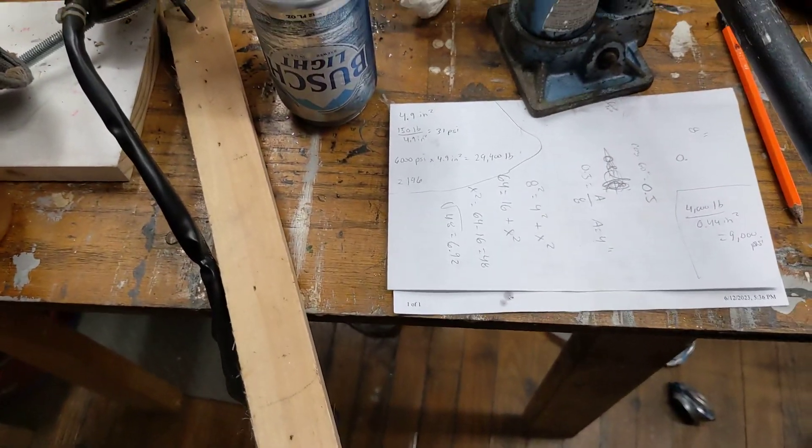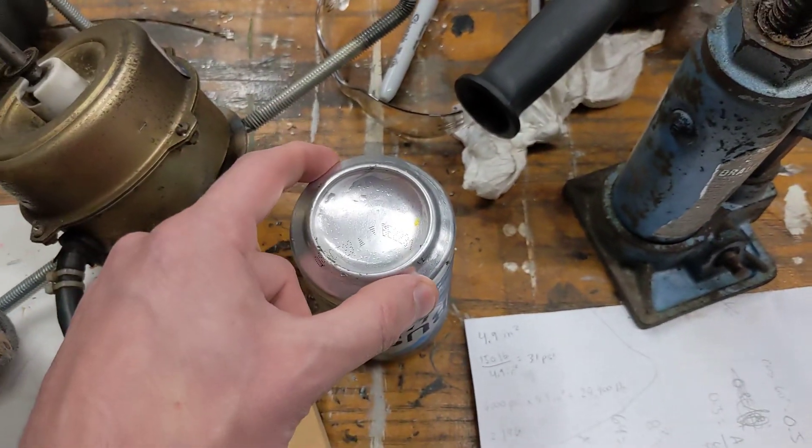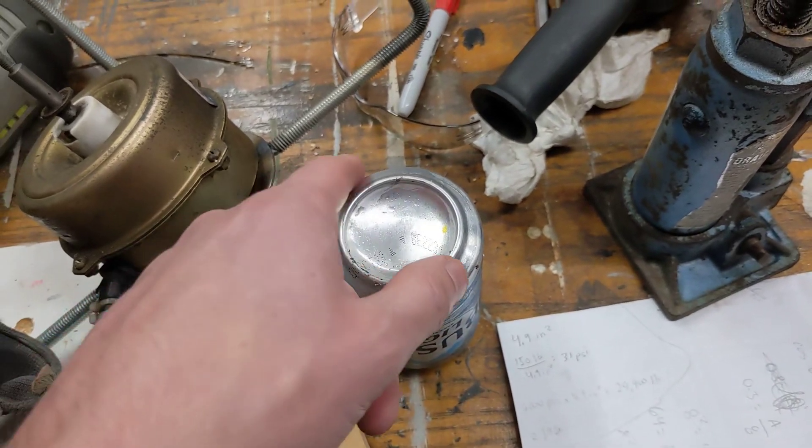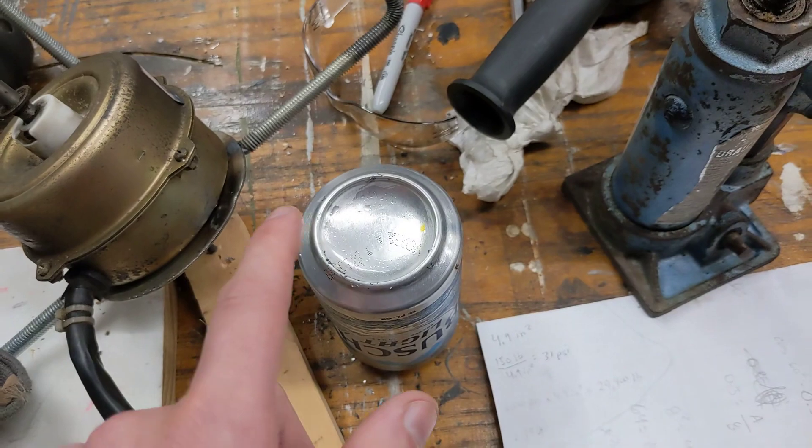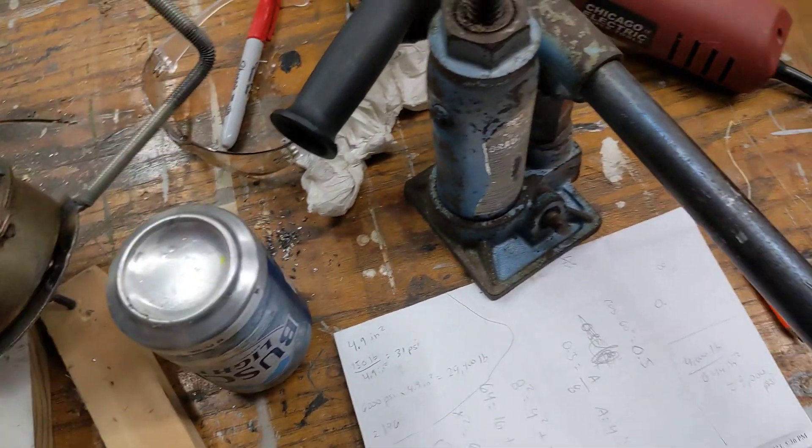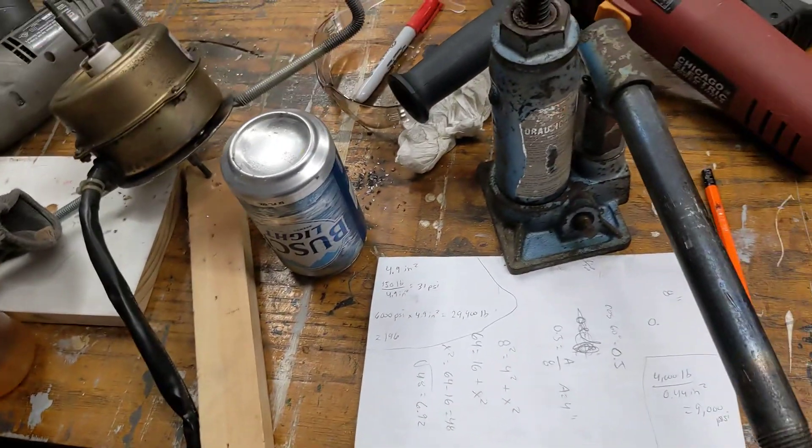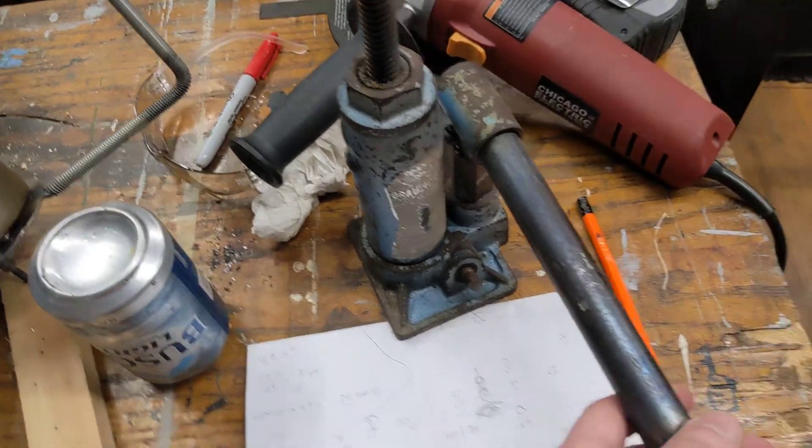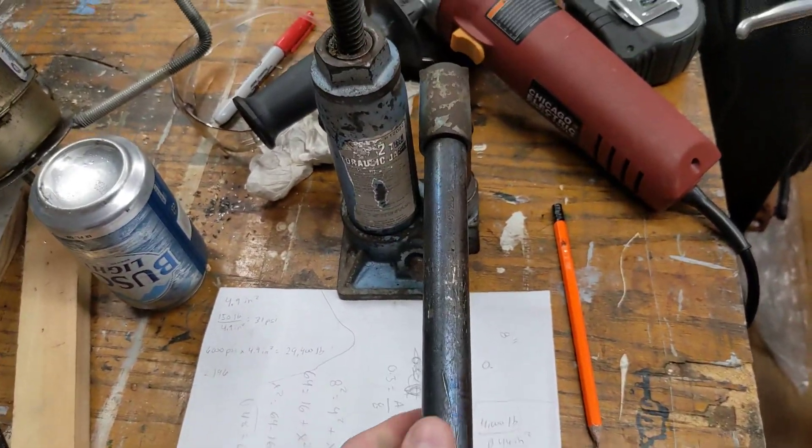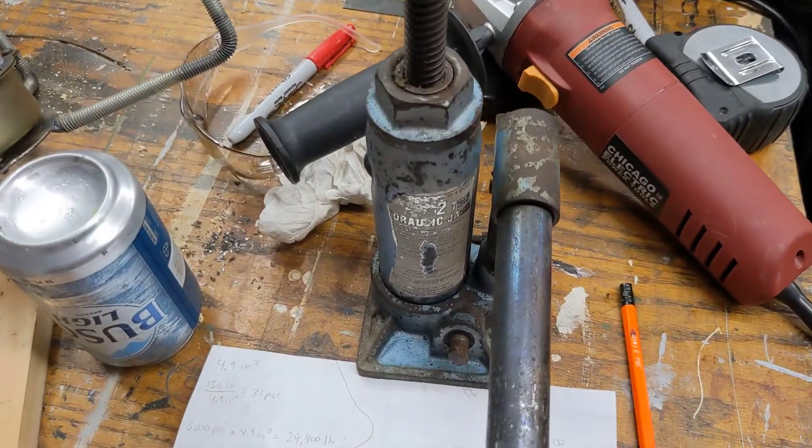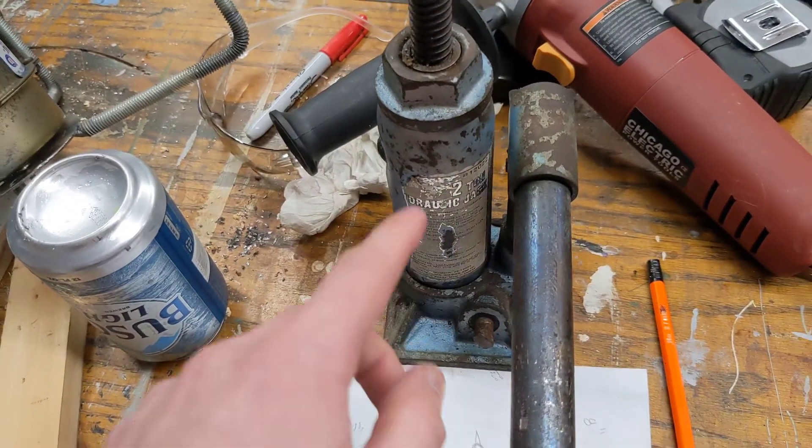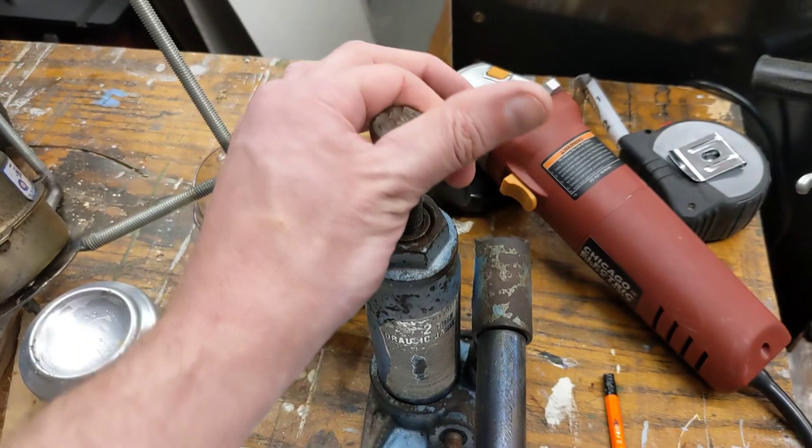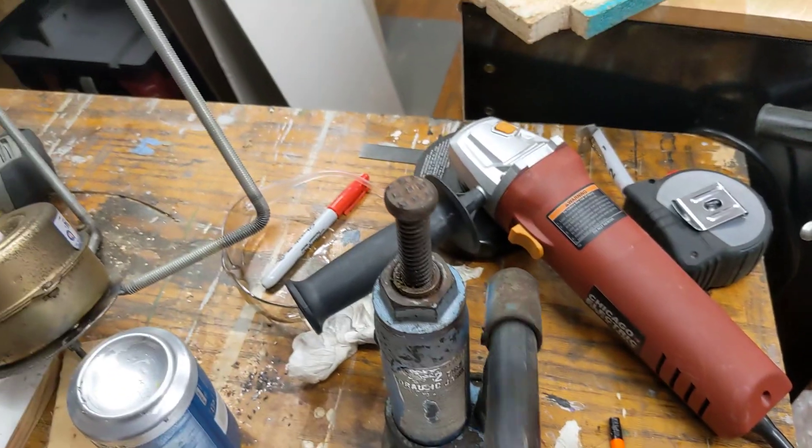Scale that up to the size of that actual watercraft and you can imagine the amount of force. It's something that's beyond the engineering that we really ever do on a regular basis. The only thing I have that could potentially approximate this kind of pressure is the hydraulic jack. So, I have a two-ton hydraulic jack. That means that I can lift an object with this that weighs two tons or 4,000 pounds.